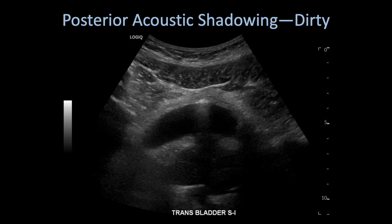We're going to look at an artifact called posterior acoustic shadowing, and specifically dirty posterior acoustic shadowing. In this case here, you can see air trapped within the bladder that is creating posterior acoustic shadowing, but there's some increased echogenicity behind it, so this is referred to as dirty posterior acoustic shadowing.